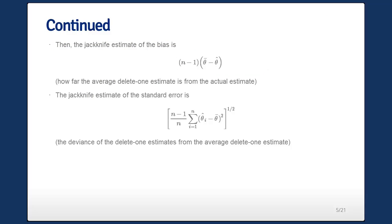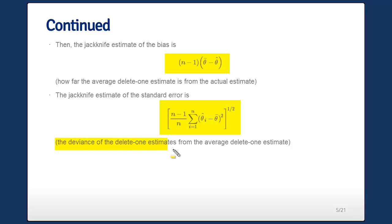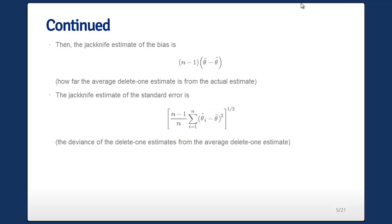If you do this, the jackknife estimate of bias is the quantity shown here. You'll find that if theta-hat is exactly the sample mean, it works out to be zero — a sensible estimate. The standard error estimate is also shown here, and it works out to be the deviance of the delete-one estimates from the average of the delete-one estimates.